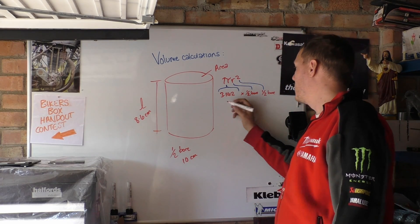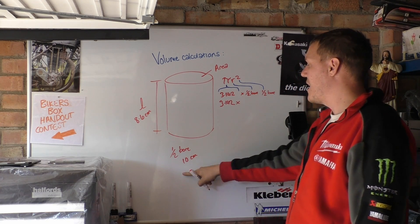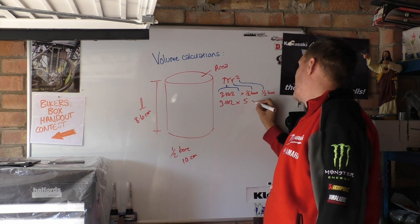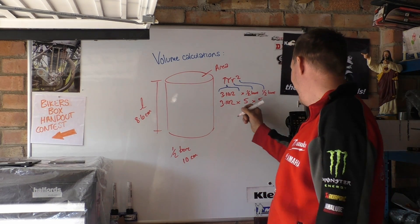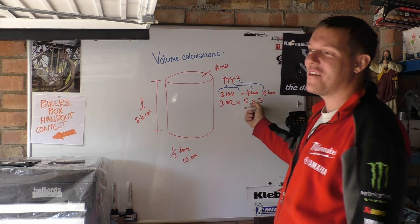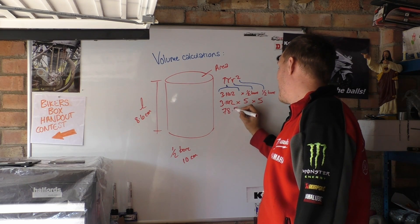So this would be 3.142 and then it'd be times half of this, which is 5, times half of that again, which is 5. I have to get my calculator up. 5 times 5 is 25 and times 3.142 is 78.55. I won't do that in my head, it's a Saturday.